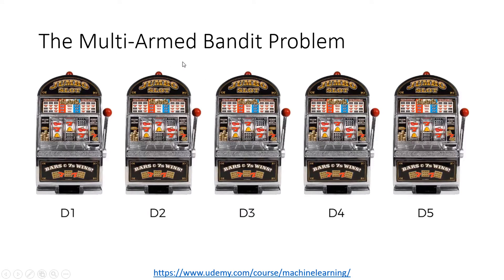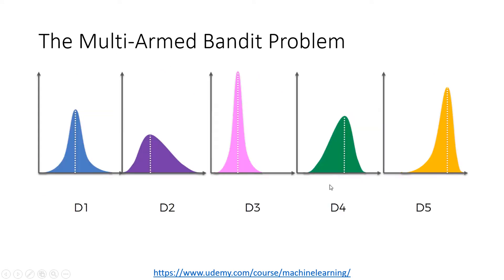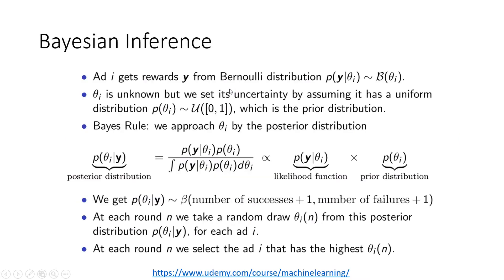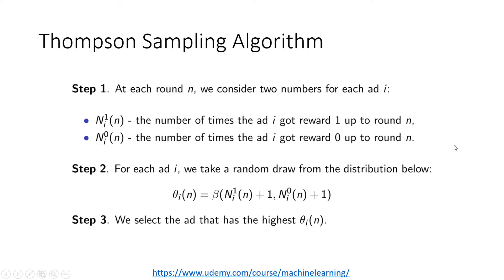So we are going to use Thompson sampling to solve the multi-armed bandit problem. I have a video explaining this problem already — it is about finding the best machine in the least amount of time, exploring the least amount of time and exploiting as early as possible. We are going to implement this Thompson sampling algorithm in Python and in R. We have already implemented the upper confidence bound algorithm in Python and R, and we are going to do the same for Thompson sampling, but in separate videos — one for Python and another one for R.